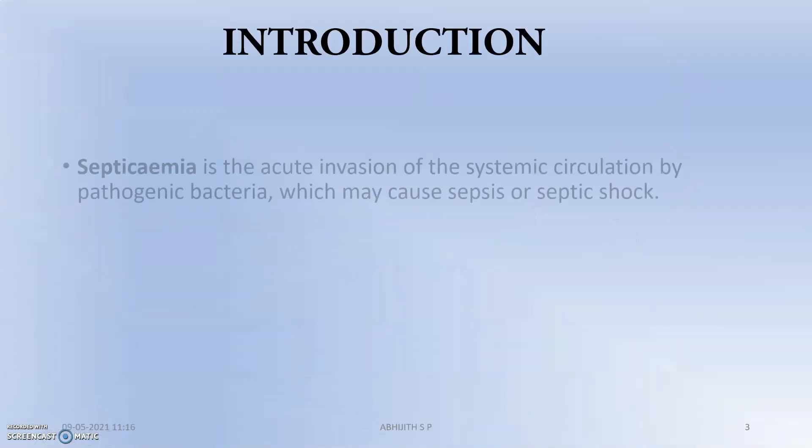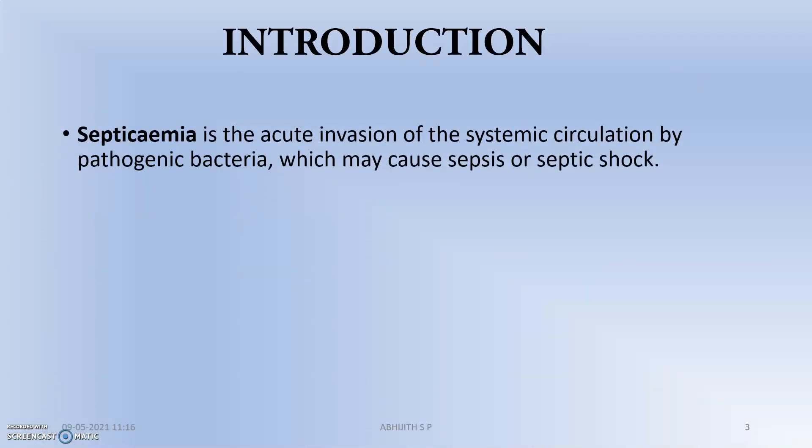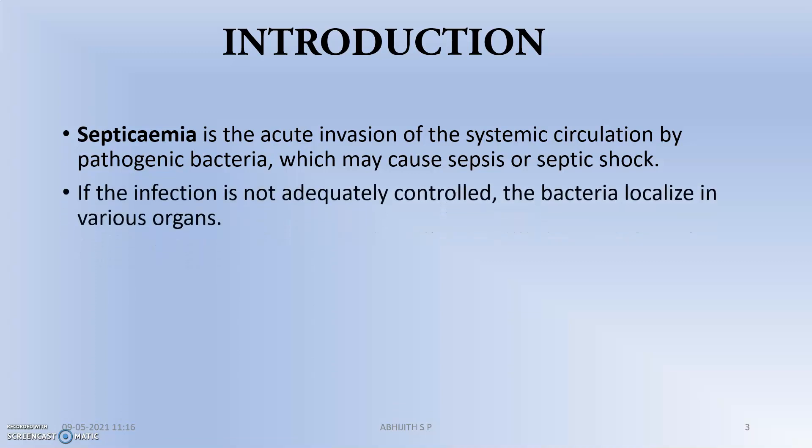Moving to the introductory part: septicemia is the acute invasion of the systemic circulation by pathogenic bacteria, which may cause sepsis or septic shock. If the infection is not adequately controlled, the bacteria will localize in many organs and the organs will stop functioning.